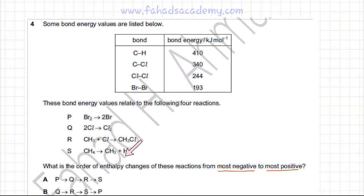Starting with reaction P, if you look at this reaction, a Br2 molecule is breaking down into two Br atoms. So what you're doing in this reaction is breaking a Br-Br bond. That's the only thing that's happening in this reaction. The energy needed to break this Br-Br bond is provided, it's 193, and it's going to be plus 193 kilojoules per mole because breaking bonds requires energy, so this is going to be endothermic.